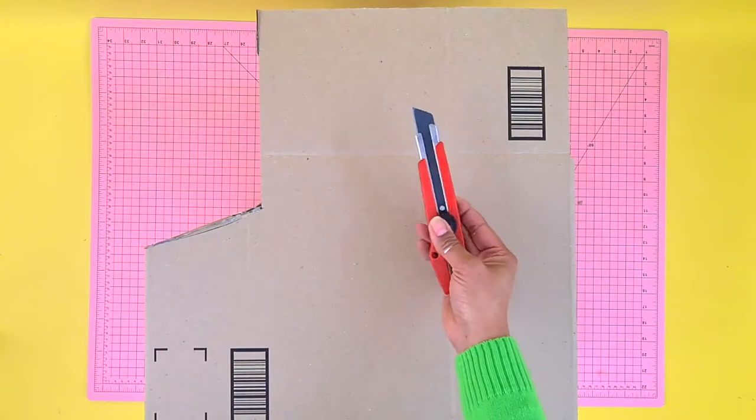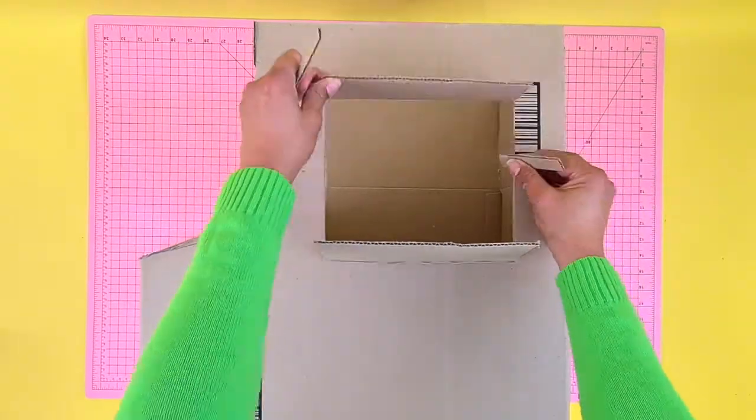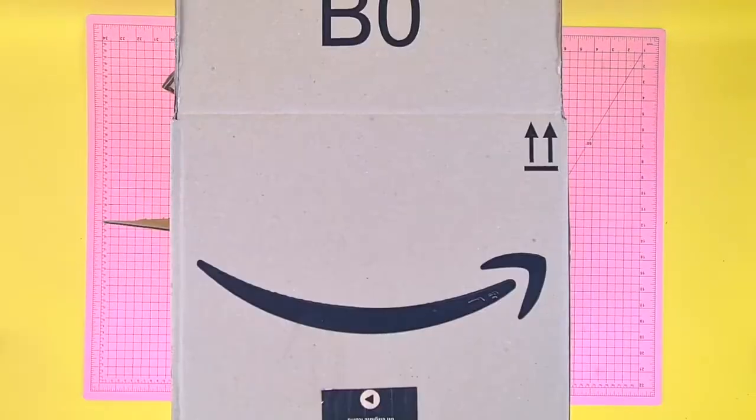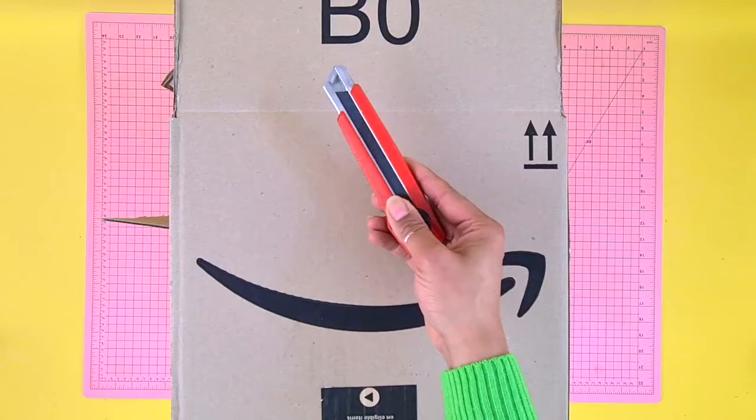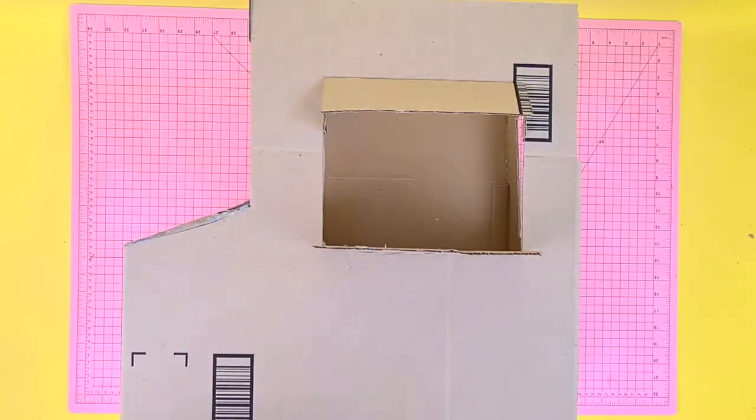Next, cut a square hole in the side to become a serving window complete with awning and counter. Glue two small strips of card under the awning to hold it up. Then, cut a hole in the back panel for a window and cover all over in white spray paint.